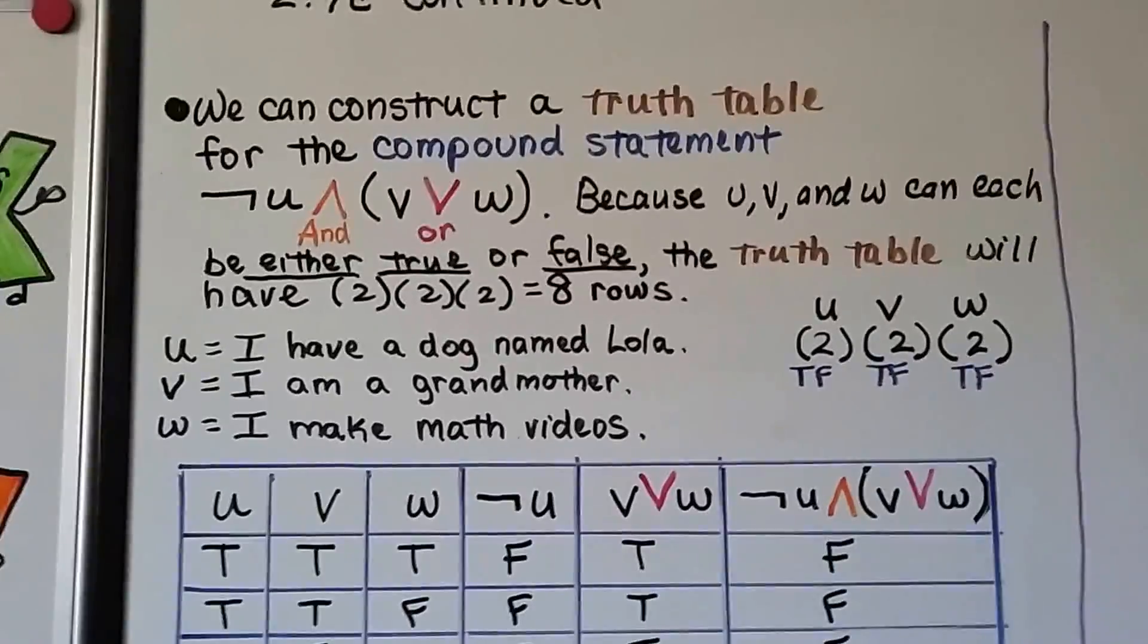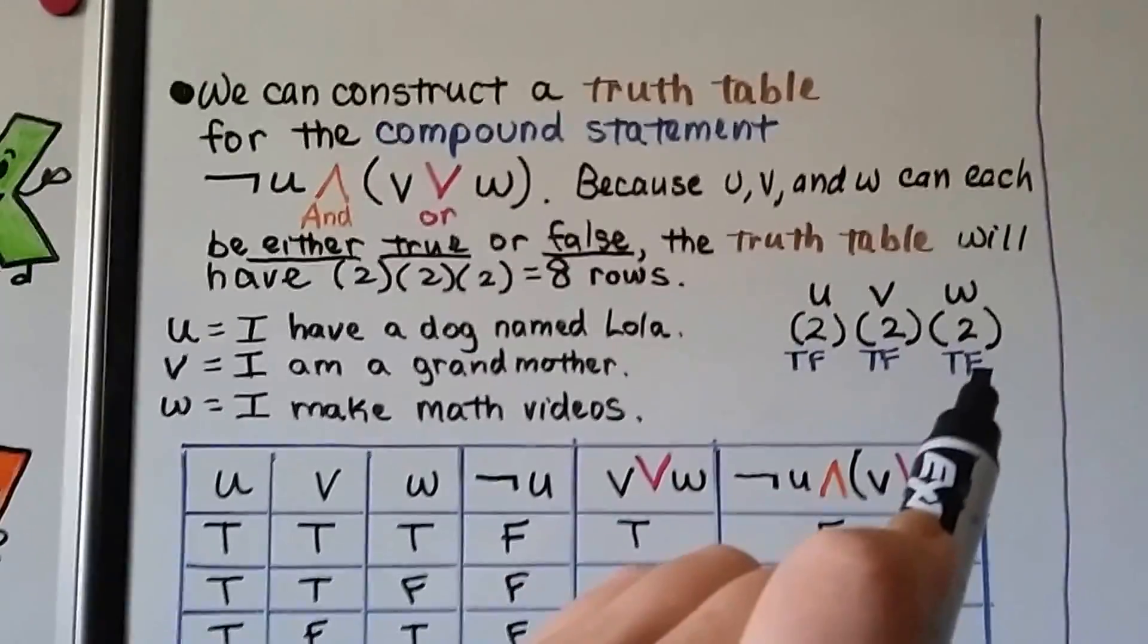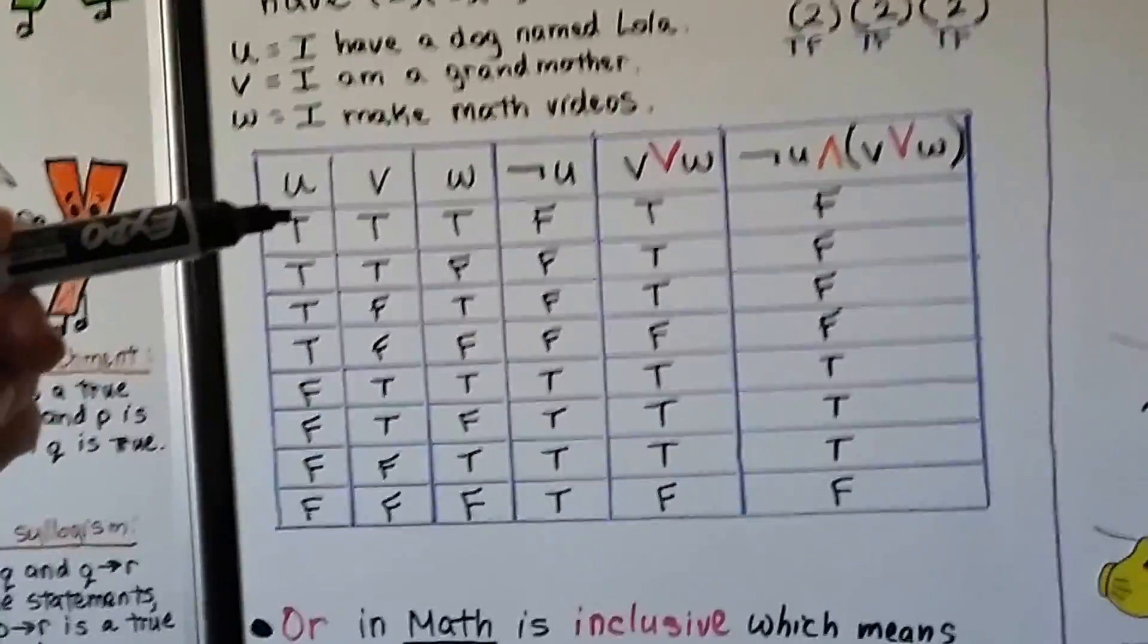So the statement for U could be true or false. V could be true or false. W could be true or false. So we do 2 times 2 times 2, so we make 8 rows. Starting here, this is just the header.